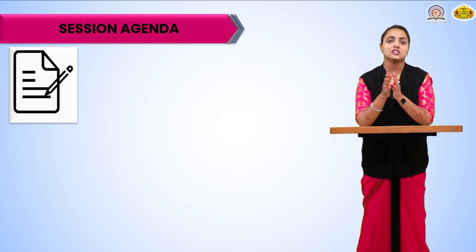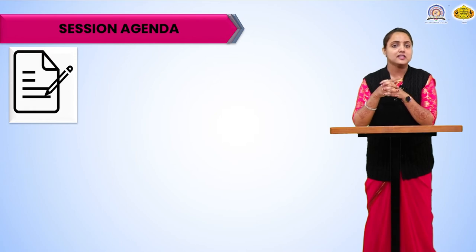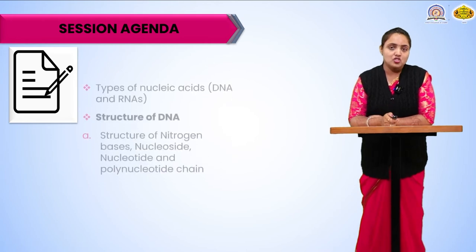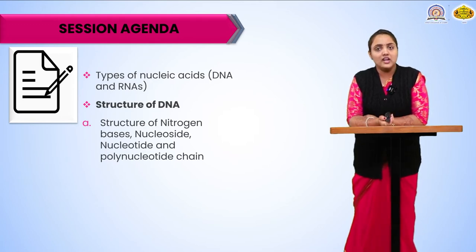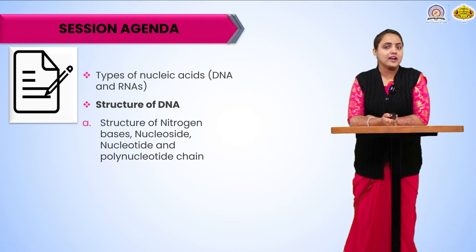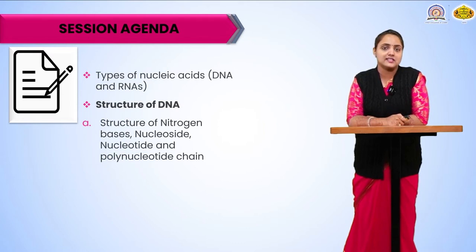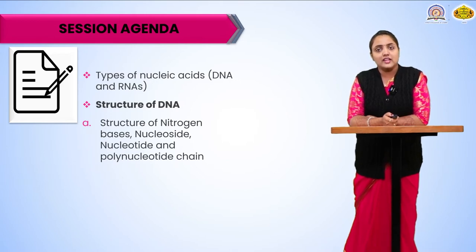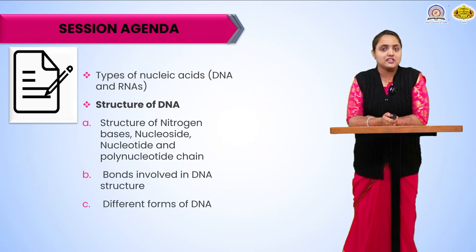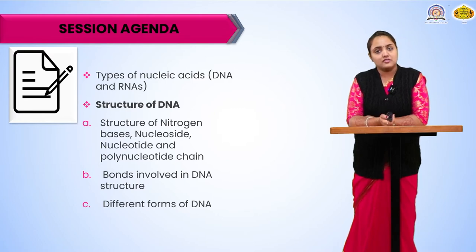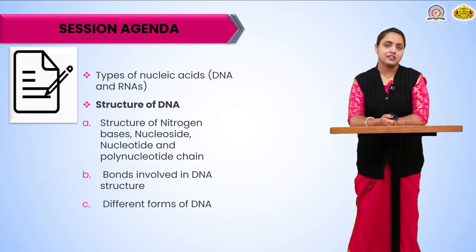In today's session we are going to see short introductions of all these components, and in the next session we are going to see them in detail with their structure. Today's session covers the types of nucleic acid — DNA and RNA — the structure of DNA. In DNA there are three components: one is the sugar, one is the phosphate group, and one is the nitrogen base. These three components are present not only in DNA but also in RNA, and they are joined together by the phosphodiester bond, causing a polynucleotide chain. We are also going to study the hydrogen bonding present between the nitrogenous bases and the different forms of DNA.